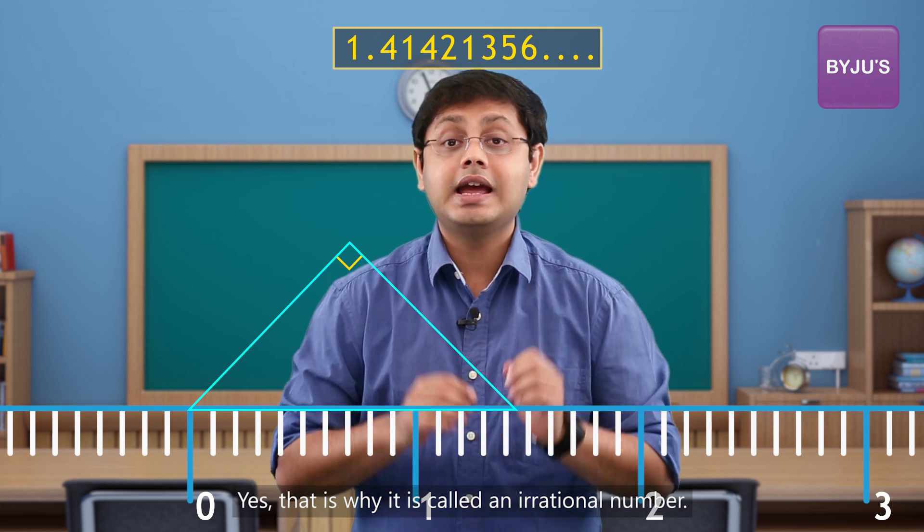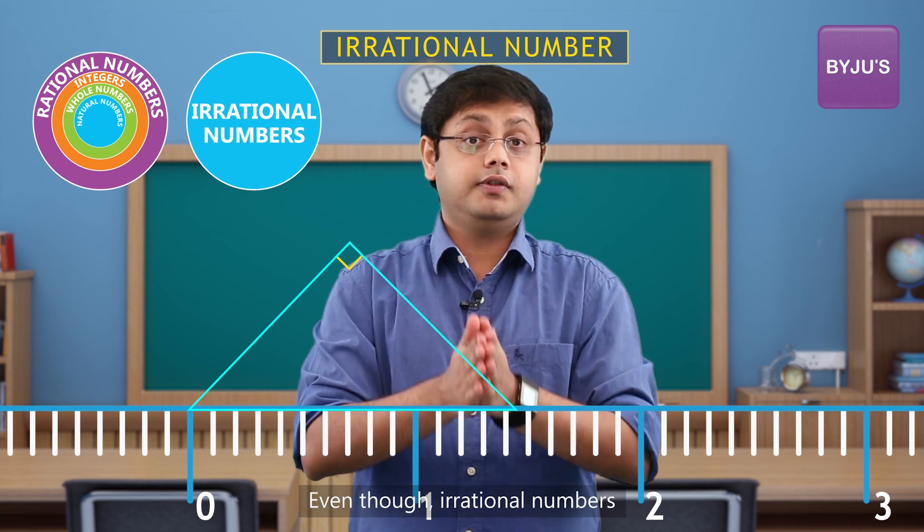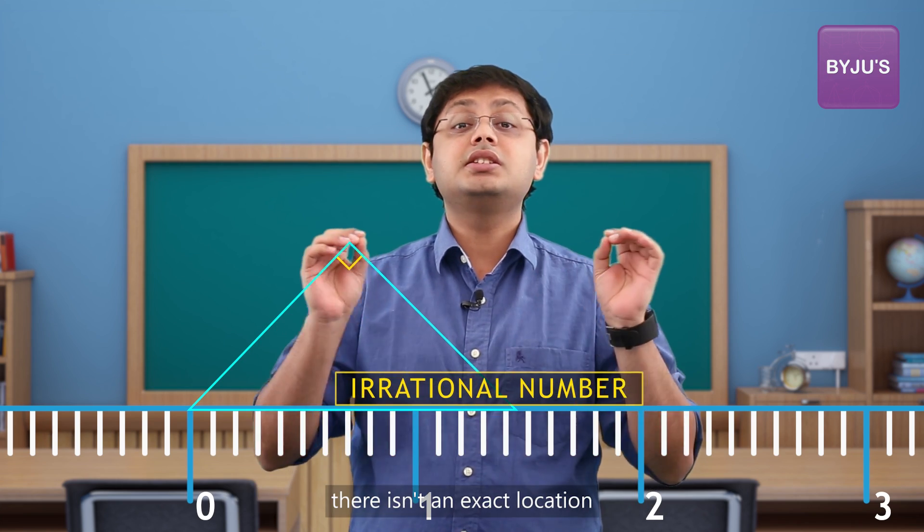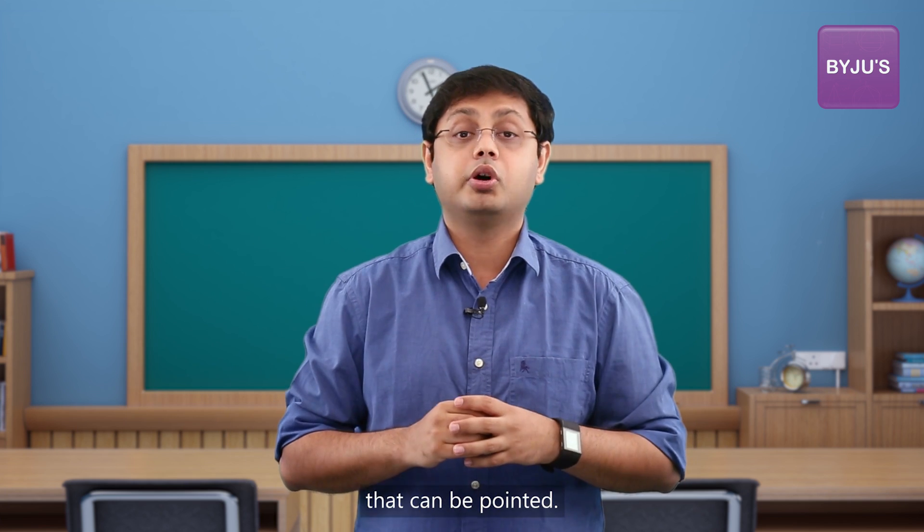Yes, that is why it is called an irrational number. Even though irrational numbers have a place on this number line, there isn't an exact location that can be pointed.